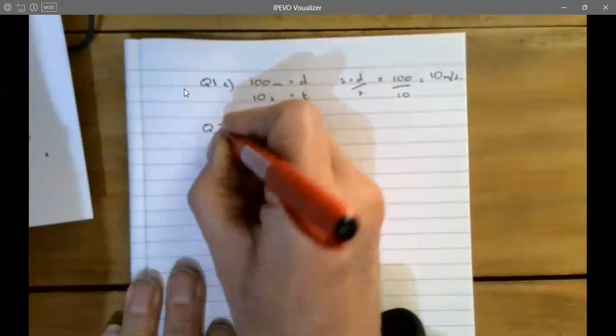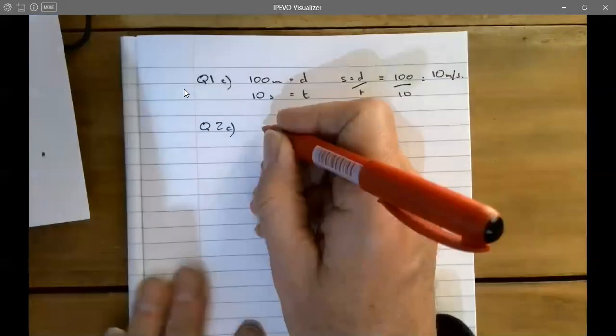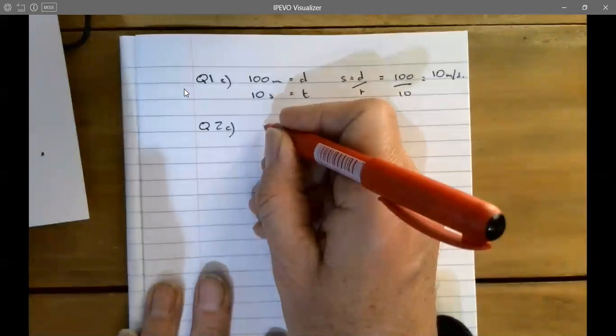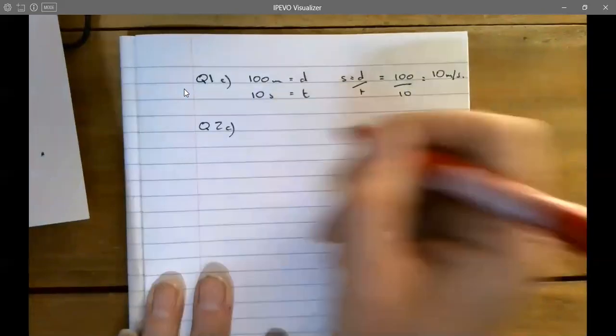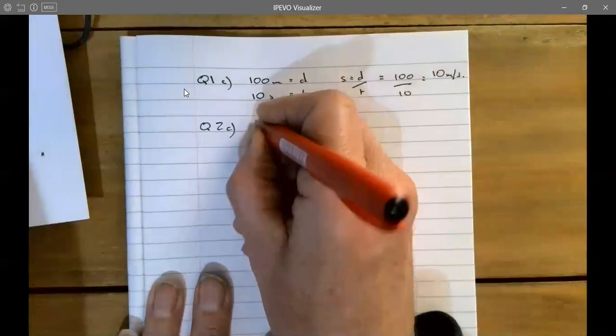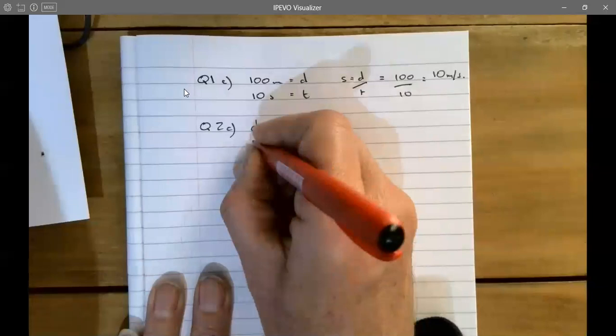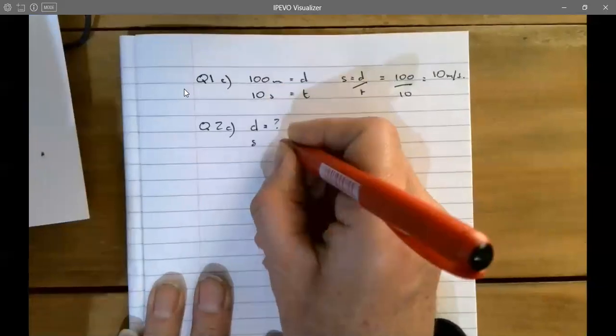Question 2c: How far does a bus move if it's traveling at 12 meters per second for 180 seconds? So how far? I'm after distance. The speed is 12 meters per second in this case.